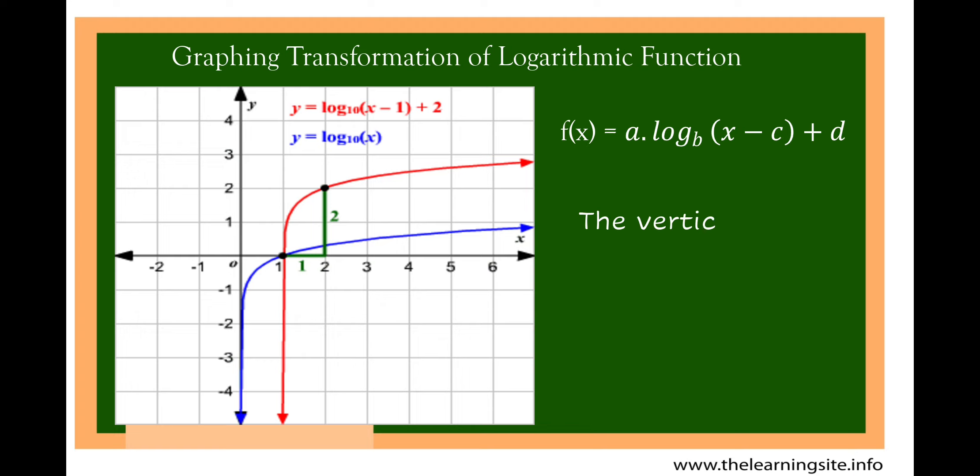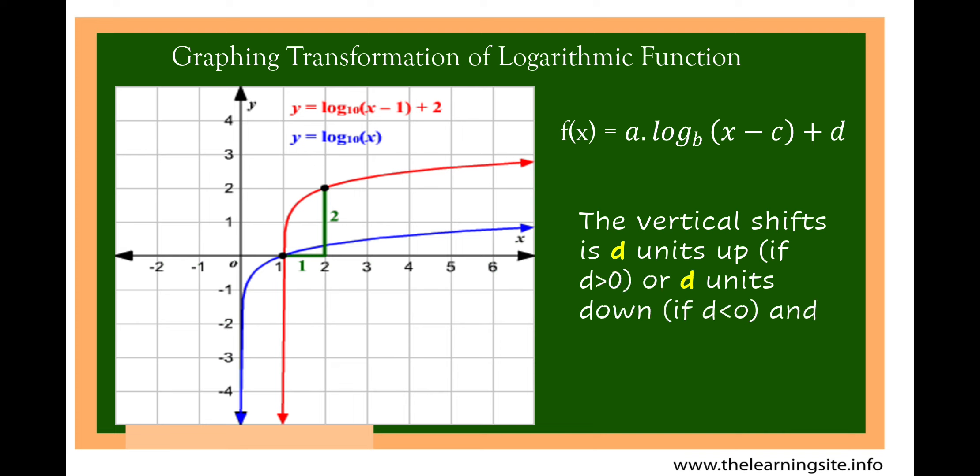What about d? The vertical shift is d units up if d is greater than 0, or d units down if d is less than 0. For example, we have the graph of y is equal to log of x to the base of 10, which is the blue graph. The graph of y is equal to log of x minus 1 plus 2 to the base of 10 has a value of d equal to 2. Since 2 is greater than 0, the graph moves upward — specifically 2 units upward.